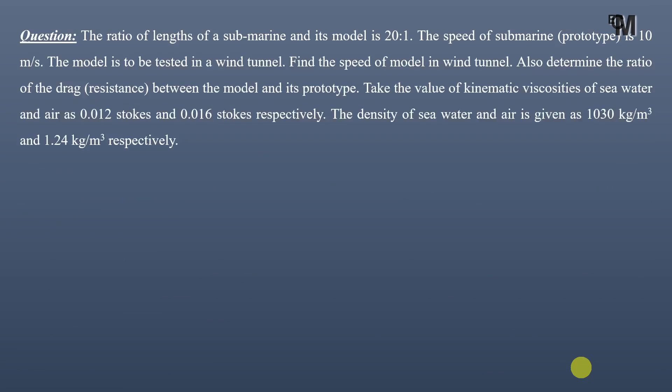Hello and welcome back. In this video we will learn how to find the dynamic similarity between the model and the prototype in fluid mechanics. Before building the actual prototype, we first build a small scale replica called the model. For dynamic similarity, the ratio of corresponding forces at corresponding points in the model and prototype should be equal. These models are usually designed based on the ratio of dominant forces, and the laws on which models are designed are called model laws or laws of similarity.